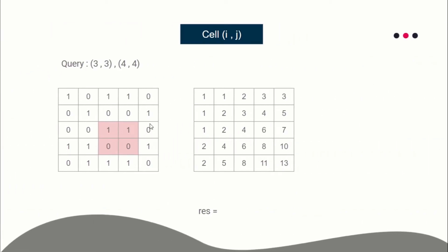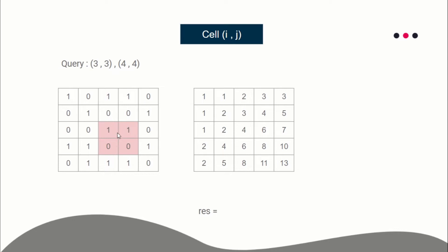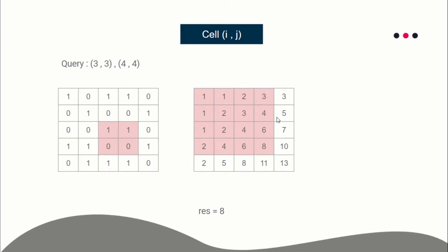Suppose you have a query from (3,3) to (4,4) — call these (sx, sy) to (ex, ey). The answer should be 2. To get the sum of this sub-grid, start by taking the whole sum from (1,1) to (ex, ey), found at cell (ex, ey). Then remove the top part — its sum is stored at cell (sx−1, ey) — subtract that.